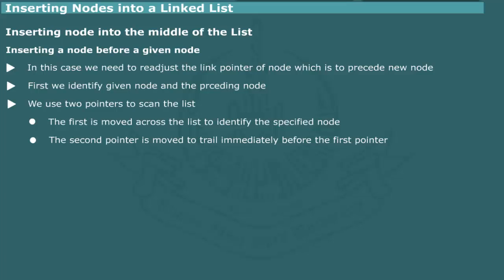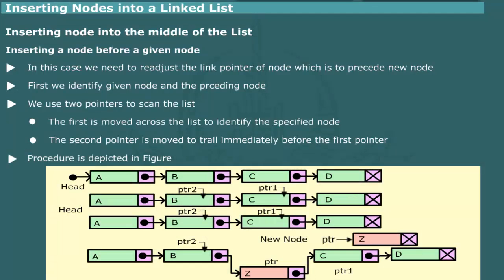Then we use the first pointer to reset the pointer of the new node to point to the given node. The procedure for inserting a node before a given node is depicted in the figure. A new node Z is inserted before node C. Observe that two pointers are used: one points to C and the other to the preceding node B. The code for the insertion algorithm is given in the demonstration that follows.